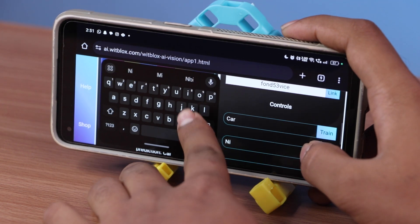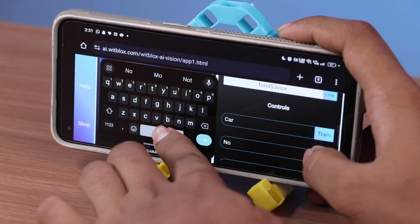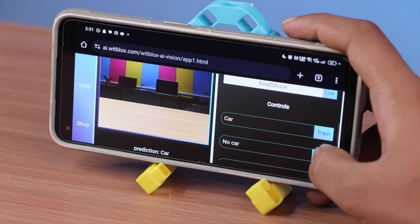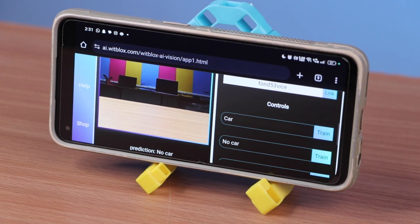Now enter no car in port 2. Once entered, show a plain background in front of the camera and click train at least 20 times.